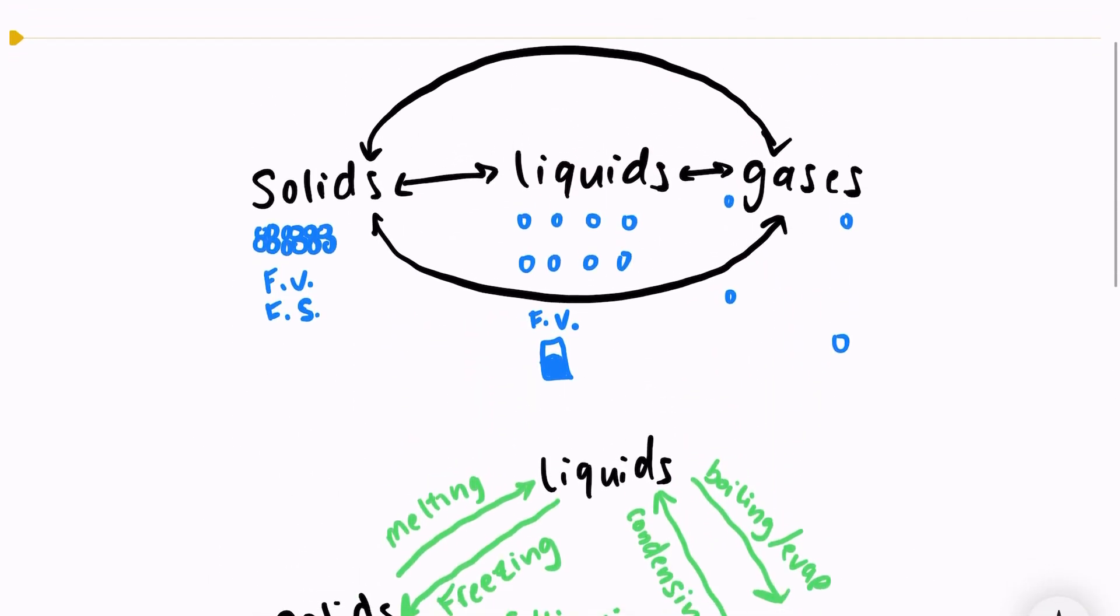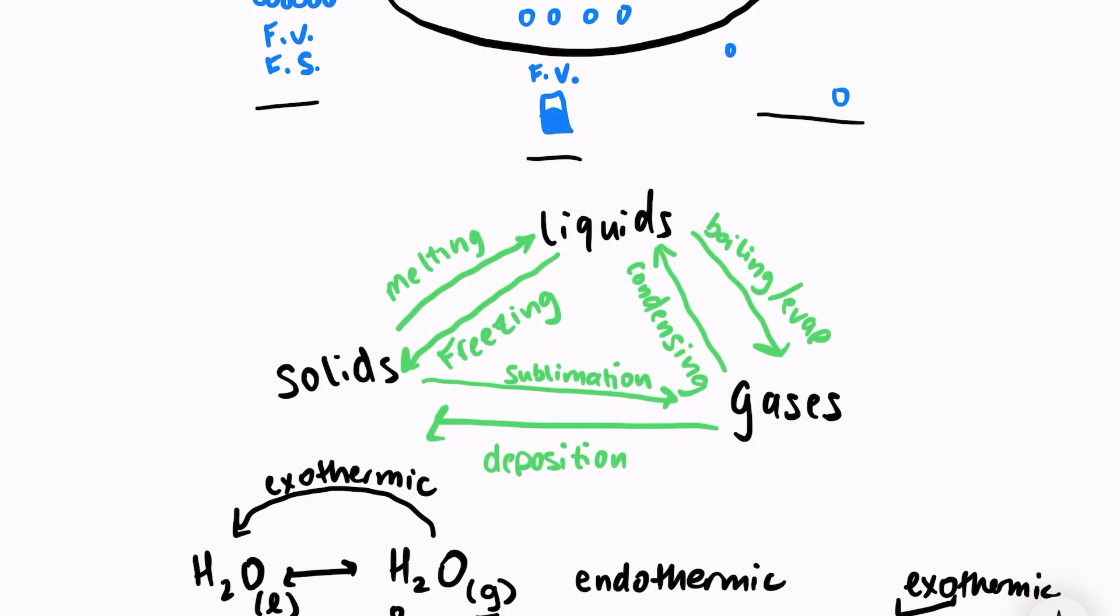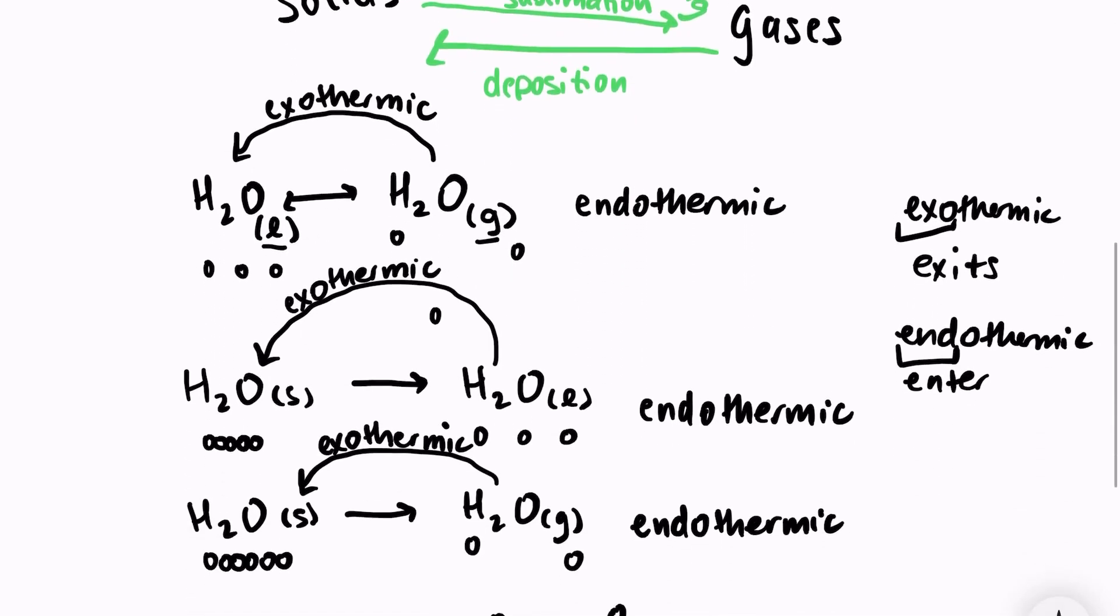So just to review, our three phase changes are solids, liquids, and gases. The major differences between them are how their particles are arranged. We can easily go in between all three phases. And we can very reasonably predict whether the change is endothermic or exothermic based on what is happening at the molecular level.